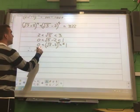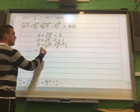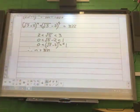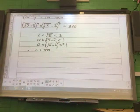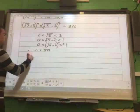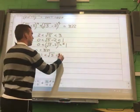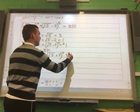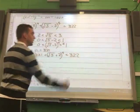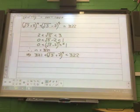Which implies that 321 is less than root 5 plus 2 to the power of 4, which is less than the next integer. In other words, root 5 plus 2 all to the power of 4 lies between 321 and 322. We are done.